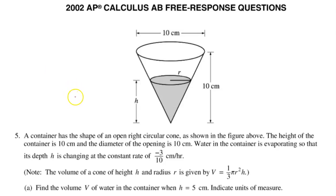In this video, we will go over problem number five from the 2002 AP Calculus exam. A container has the shape of an open right circular cone, as shown in the figure above. The height of the container is 10 centimeters, and the diameter of the opening is also 10 centimeters. Water in the container is evaporating